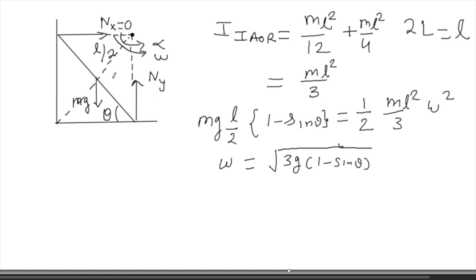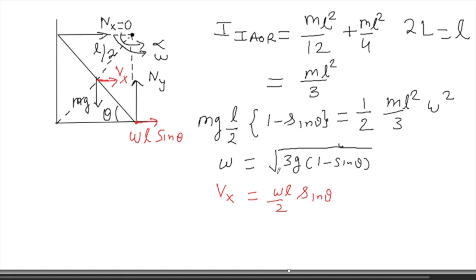If you want to calculate the horizontal velocity of the center of mass, you have many ways. The velocity of the lowest point will be ω × l sinθ, because the vertical gap between that point and the instantaneous axis of rotation is l sinθ, and the entire body rotates about the IAR. So the velocity of the lowest point is ωl sinθ. The velocity of the center of mass Vx is half of this, so Vx = (ωl/2)sinθ. You already have the value of ω, so you are left with Vx as a function of θ, which you must differentiate.